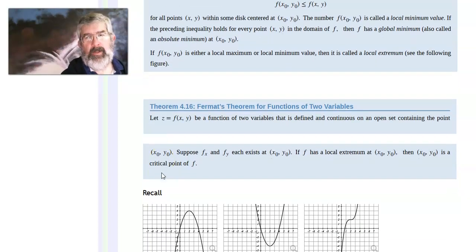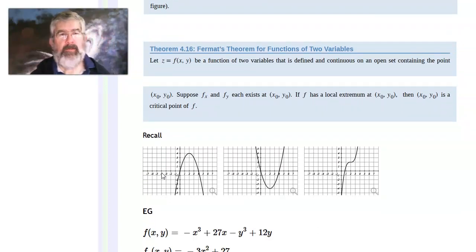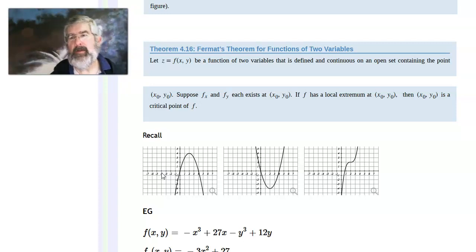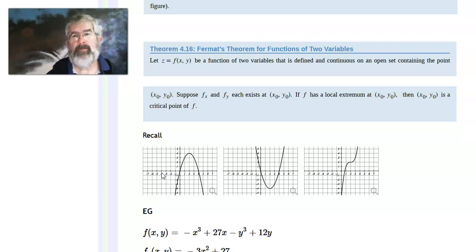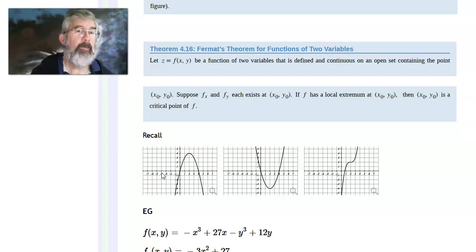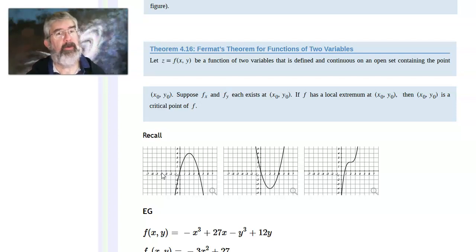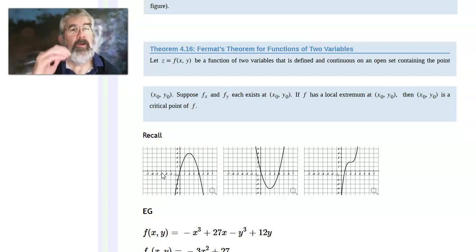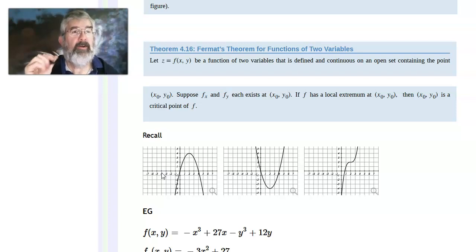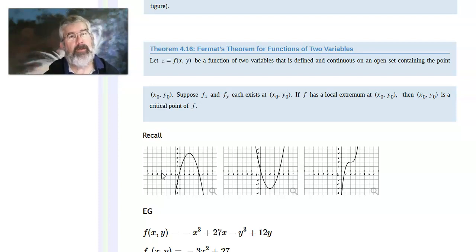Fermat's Theorem says: if you've got a function of two variables defined and continuous on an open set containing X₀, Y₀, and suppose that the partial derivatives exist at X₀, Y₀, then if F has a local extreme value — either a local min or a local max — at X₀, Y₀, then X₀, Y₀ must be a critical point. If you're at the top of a hill or at the bottom of a valley, then either both of your partial derivatives with respect to X and Y are both 0, or one of them doesn't exist.